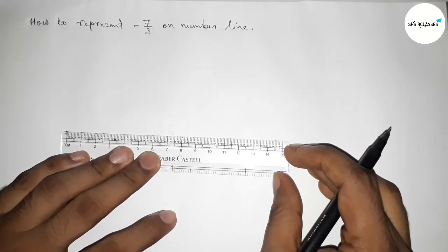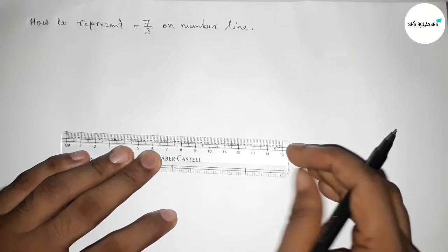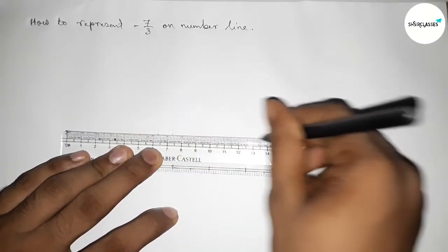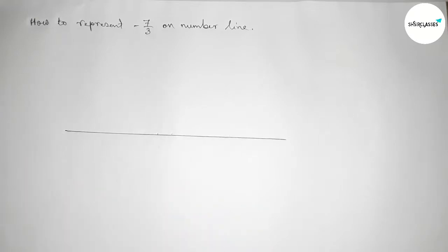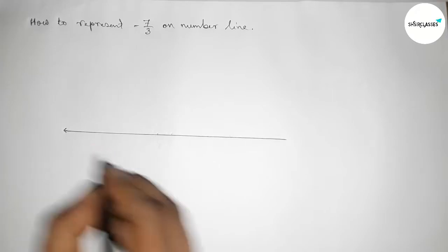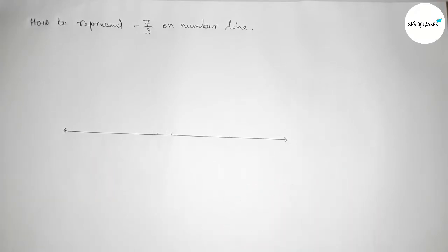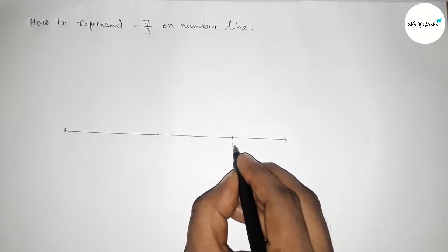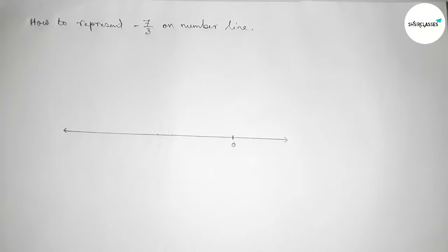First of all, we need to construct a number line. Draw a line of any length and mark arrows on both sides. Next, mark zero here. Now for easy calculation,